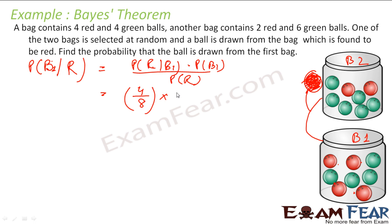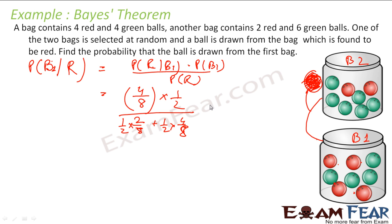Probability of getting bag 1 is 1 by 2, because you can choose bag 1 or bag 2. For probability of red overall: you can get red from bag 1 or from bag 2. From bag 2, there are 2 red balls out of 8 total, so 2 by 8, multiplied by the probability of selecting bag 2 which is 1 by 2. From bag 1 it is 4 by 8 into 1 by 2. Combining both paths gives the total probability of red.